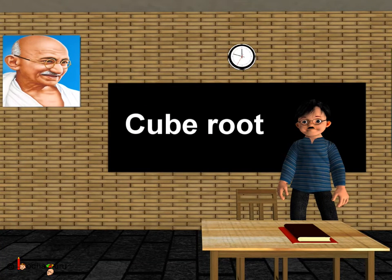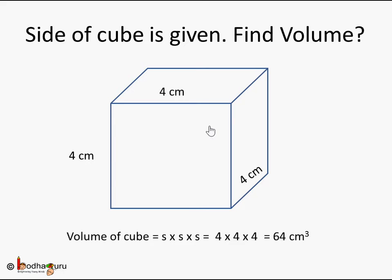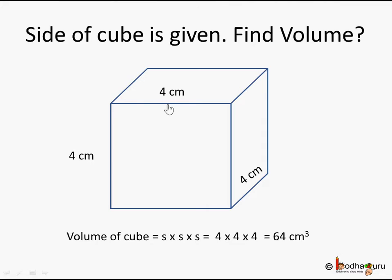Hello children, in this video we are going to learn what is a cube root of a number. Before that, let's revise what is a cube of a number. When we are given a three-dimensional shape — a cube with side 4 centimeters, where length, breadth, and height are each 4 centimeters — and we need to find the volume, we use: volume = side × side × side. So 4 × 4 × 4 = 4 cubed = 64 centimeter cube. We use cube when sides are given and we need to find volume.